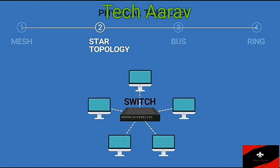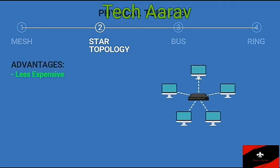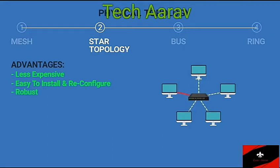The central point acts as an exchange. If one device wants to send data to another, it sends the data to the central point, which then sends the data to the other connected device. Advantages: Less expensive than a mesh topology because each device needs only one link and one I/O port. It is easy to install and reconfigure. It is robust because if one link fails, only that link is affected. Fault identification is easy.